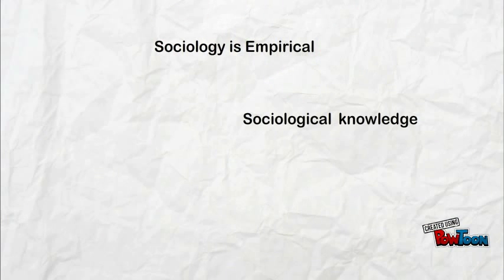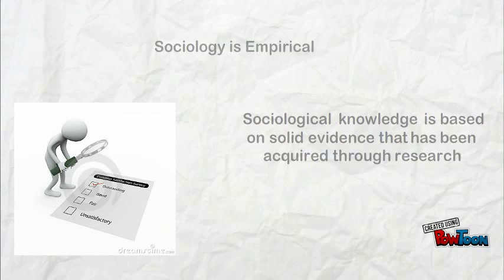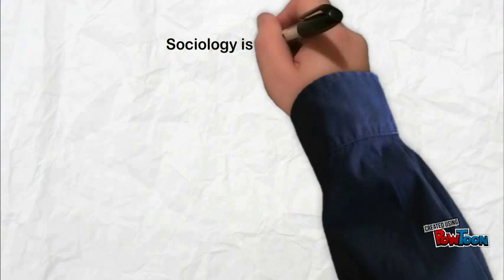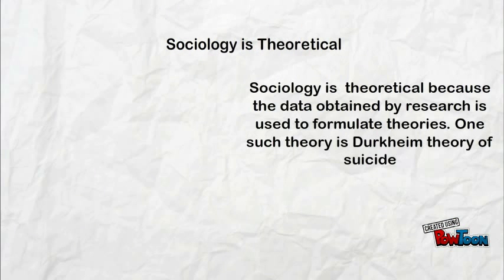Empirical: sociological knowledge is based on solid evidence that has been acquired through research. Theoretical: the data obtained by researchers is used to formulate theories. For example, Durkheim's theory of suicide.